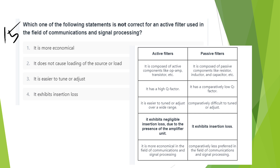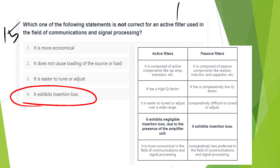Which one of the following statements is not correct for an active filter used in the field of communication and signal processing? The answer is option D — that is, it exhibits insertion loss. That is not correct for an active filter. Active filters are more economical, do not cause loading of the source, and are easier to adjust and tune.